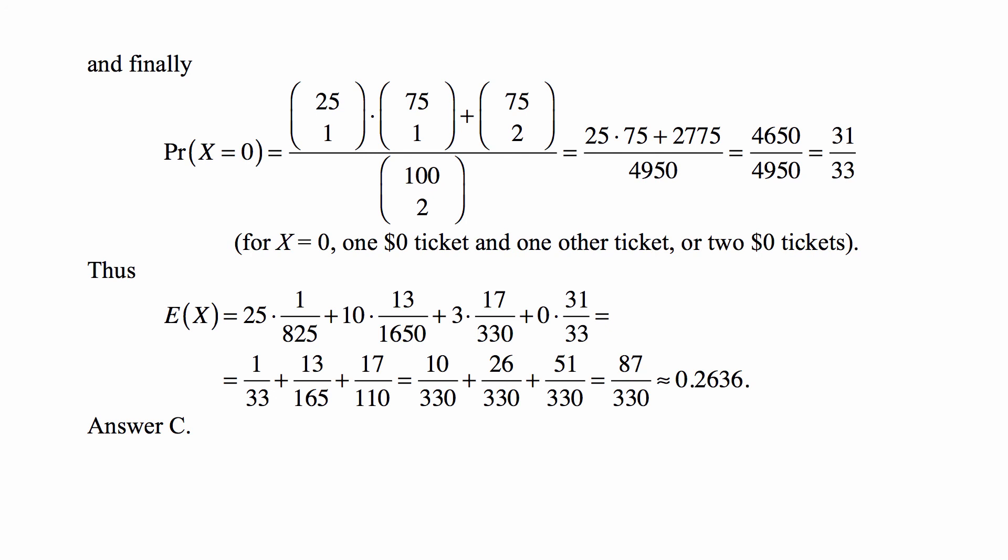And the expected value is, we just multiply each value by its probability. And 0 of course is convenient, we don't have to really take that into account. So we end up with 87 over 330, or approximately 0.2636. That's answer C, and we have successfully done this problem.